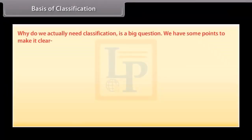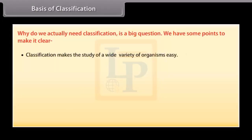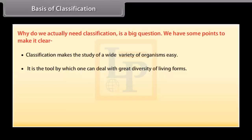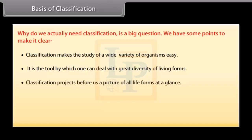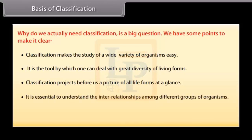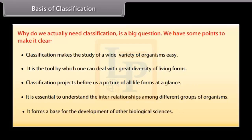Why do we actually need classification? Classification makes the study of a wide variety of organisms easy. It is the tool by which one can deal with great diversity of living forms. Classification projects before us a picture of all life forms at a glance. It is essential to understand the interrelationships among different groups of organisms, and forms a base for the development of other biological sciences.